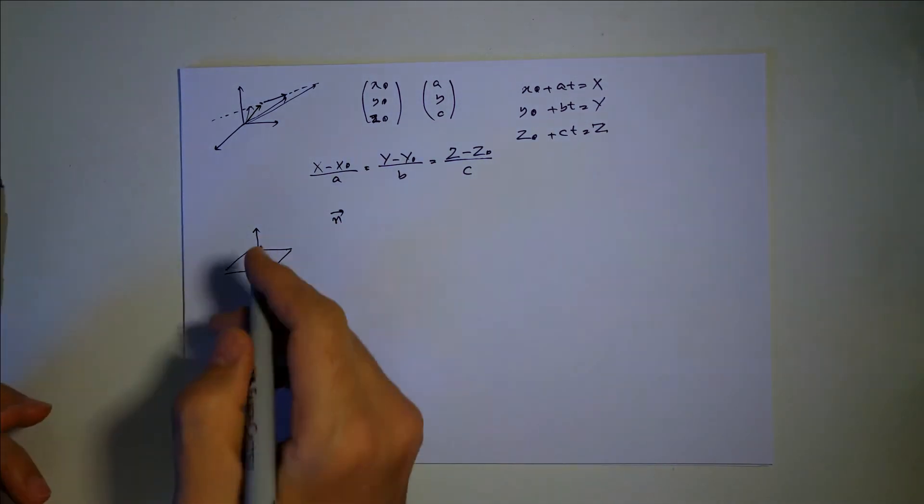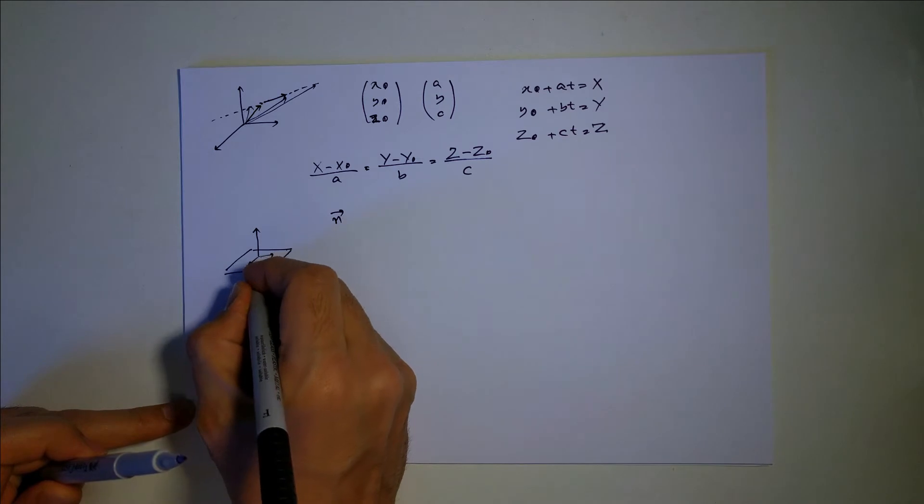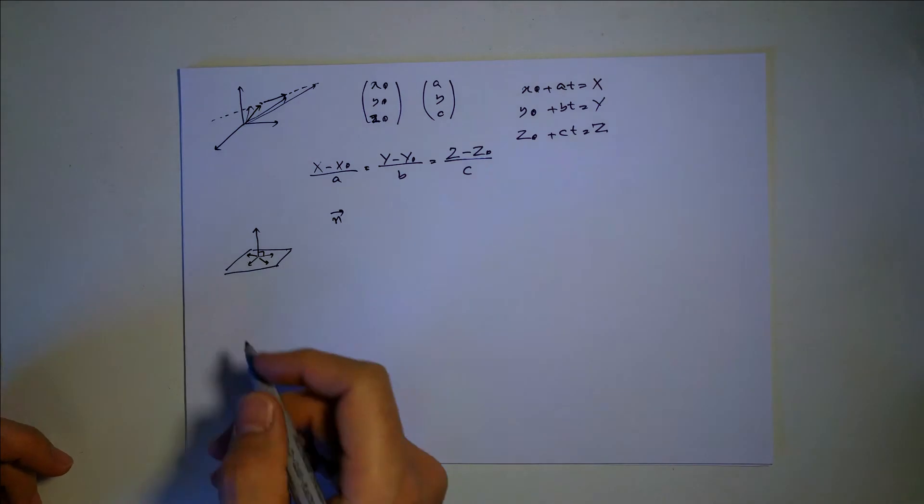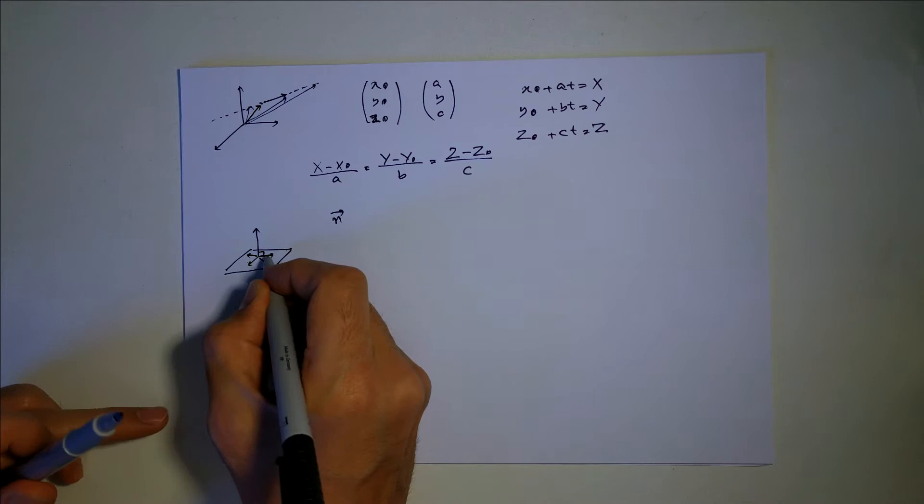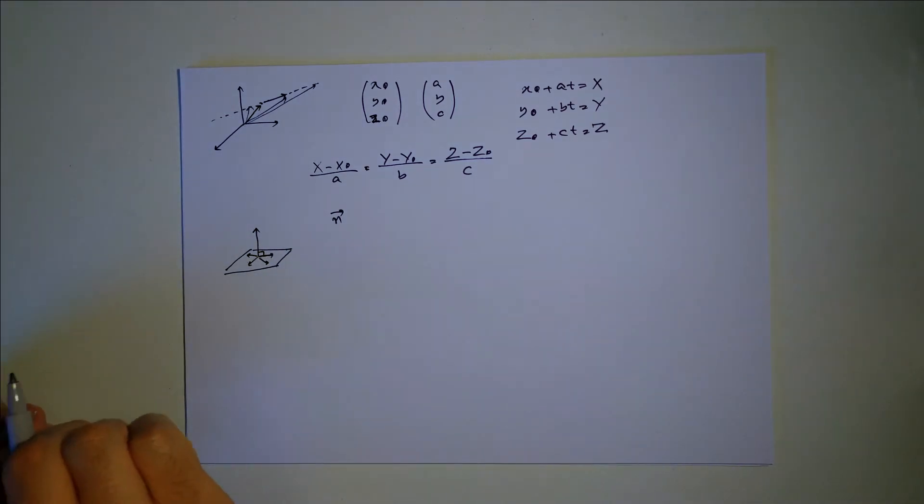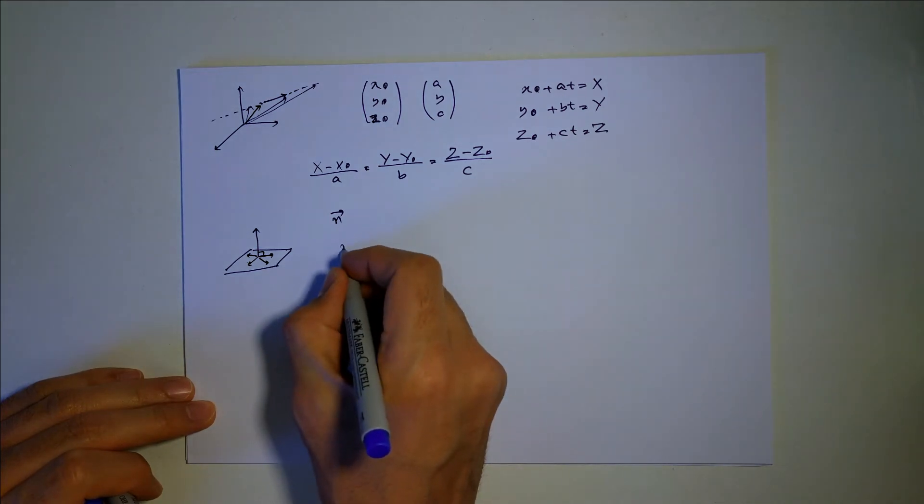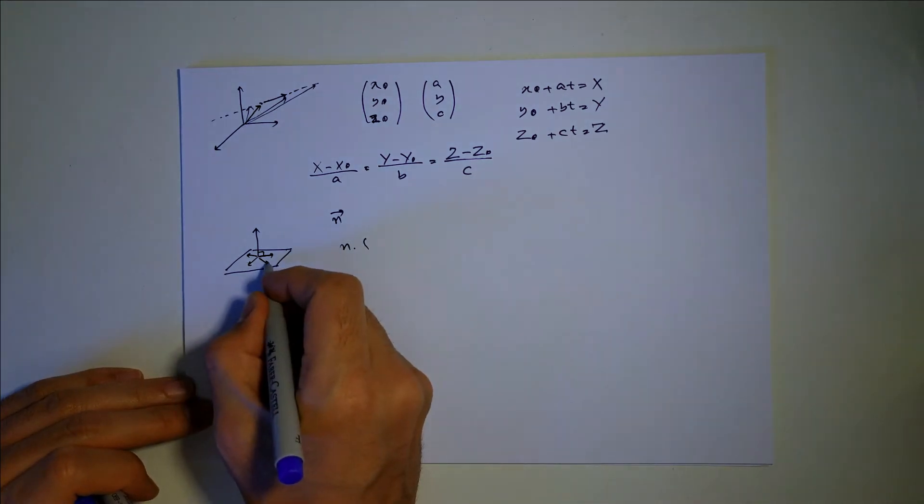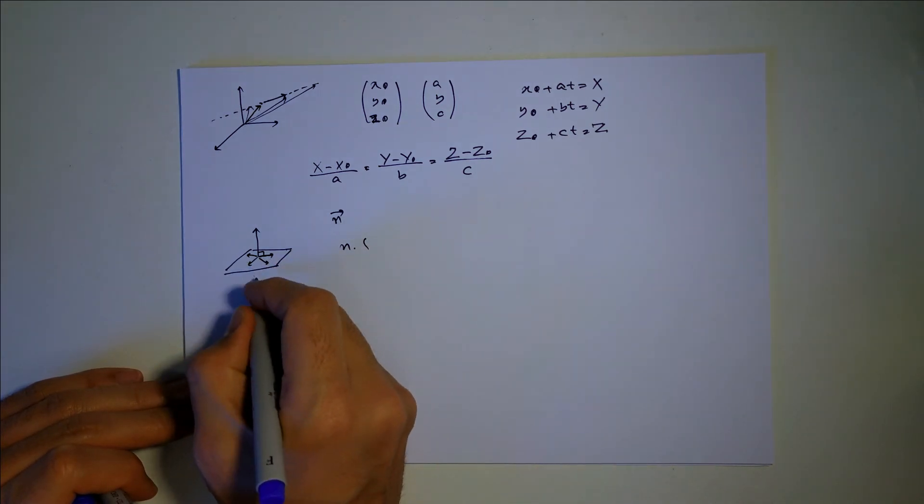So for all these points in this plane, if I draw this vector like this, you can see the normal is perpendicular to this plane, so the dot product of them is going to be zero. So I can write it down basically like this: n dot (x minus x zero, y minus y zero, z minus z zero), which is this point that I have.